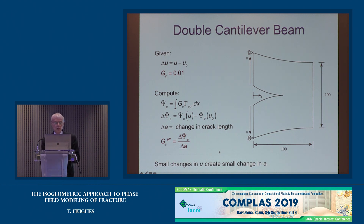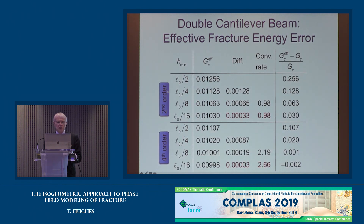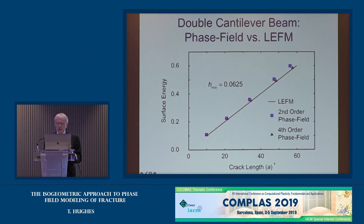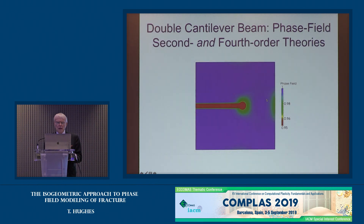In a two-dimensional double-cantilever beam problem using a locally hierarchically refined mesh, the convergence rate for the effective fracture energy G is linear for the second-order theory but approaching rate three for the fourth-order theory. Comparing with linear elastic fracture mechanics, the fourth-order theory shows better surface energy and strain energy approximations, which also affect stresses and strains.